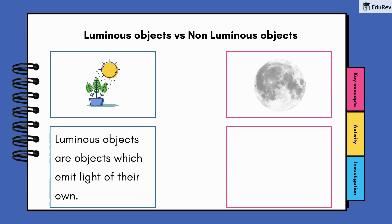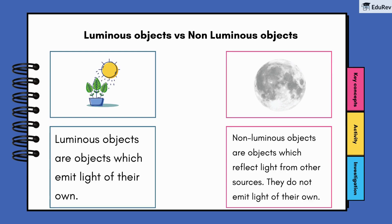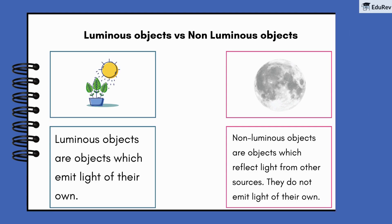Luminous objects are objects which emit light of their own, like the sun or a light bulb. Non-luminous objects are objects which reflect light from other sources. They do not emit light of their own — that's the only way we can see them.